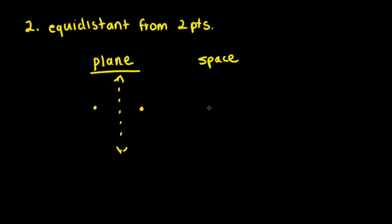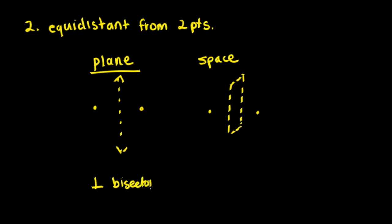Now in space, since it's three-dimensional, we're going to have a slightly different answer. If we're asked to find the locus of points equidistant from two points, that would be a perpendicular bisector plane. So the locus of points equidistant from two points in a plane is a perpendicular bisector — this one is a line. And the locus of points equidistant from two points in space is also a perpendicular bisector — however, this one is a plane.